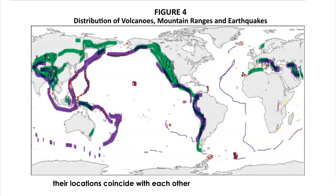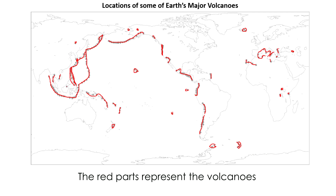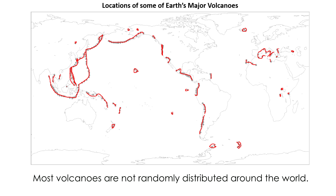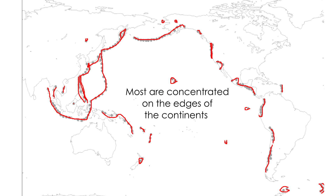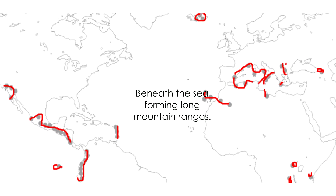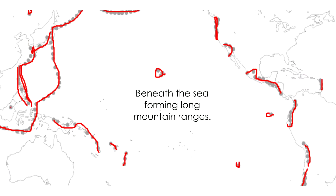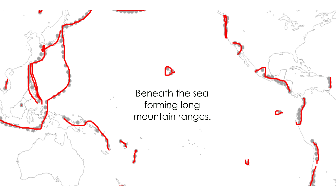Most volcanoes are not randomly distributed around the world. Take a look at this map. What did you notice with the location of active volcanoes? Most are concentrated on the edges of continents, along island chains, or beneath the sea forming long mountain ranges.